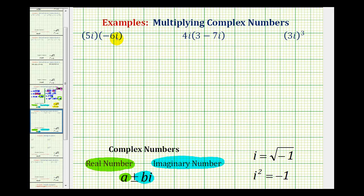So for 5i times negative 6i, since 5 times negative 6 is negative 30, and i times i would be equal to i squared, this would be our product.